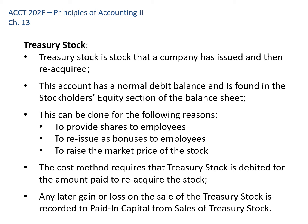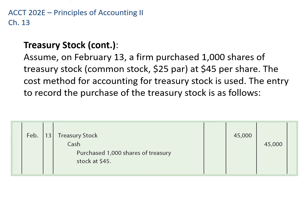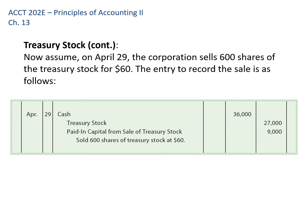The argument against buybacks is there's no real economic gain, but that's why it happens. The Treasury stock account has a normal debit balance — it's a contra account within the stockholders' equity section of the balance sheet. We use the cost method for Treasury stock, meaning we can forget about par value; we record Treasury stock at what we pay for it. For example, on February 13th we purchase 1,000 shares of Treasury stock at $45 per share. We debit Treasury stock for $45,000 and credit cash for $45,000.